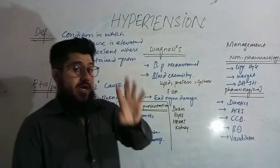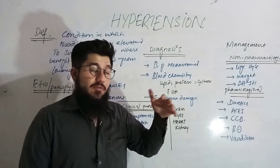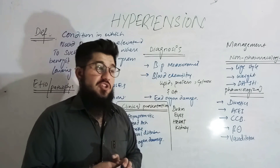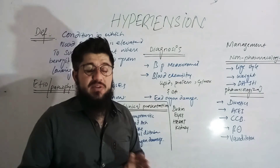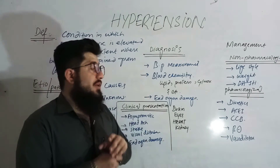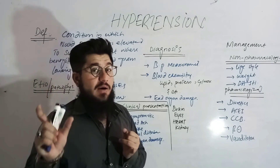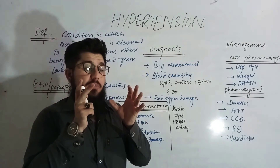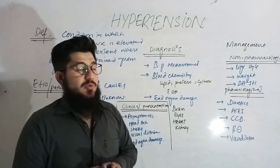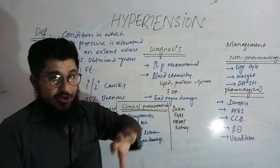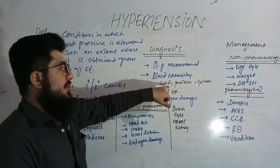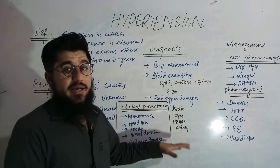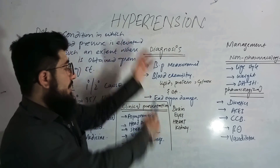We have already uploaded a video on blood pressure measurement highlighting the wrong practices commonly observed among physicians, nurses, doctors, and pharmacists. Search 'how to measure blood pressure by Dr. Uut' to get the correct method. We also check blood chemistry, lipid content, protein, glucose, and assess end organ damage in the brain, eyes, heart, and kidneys.